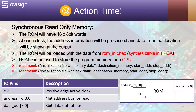It's action time! Let's design a synchronous single-port read-only memory. The ROM will have 16 by 8-bit words. At each clock, the address information will be processed and the data from that location will be shown at the output. The ROM will be loaded with data from rominit.hex, which is a separate file. This technique is also synthesizable in FPGA. ROM can be used to store the program memory for a CPU, for example.